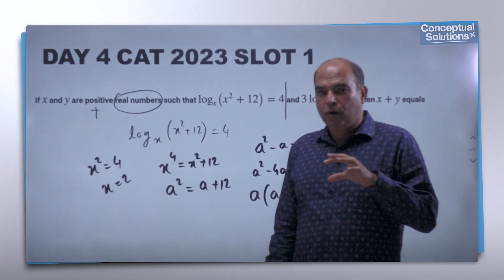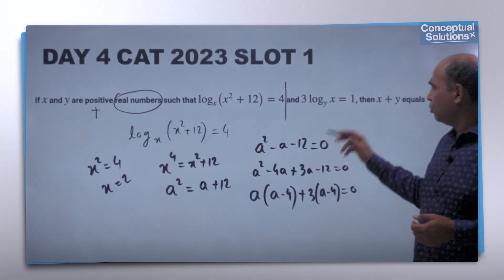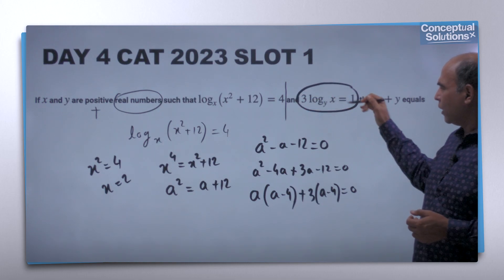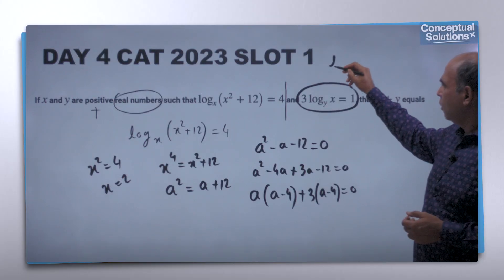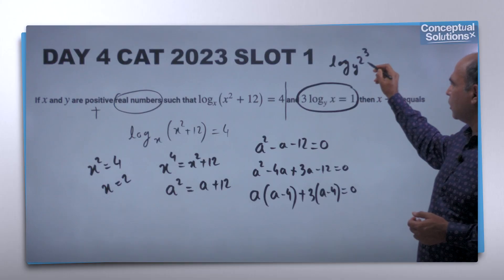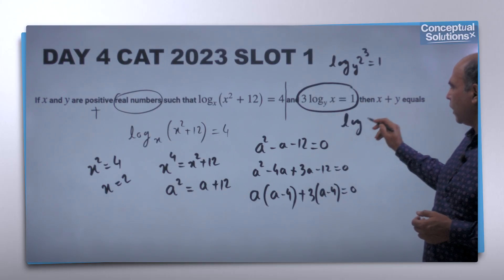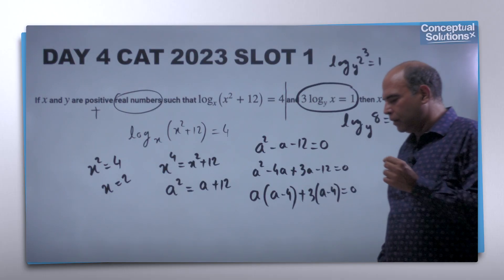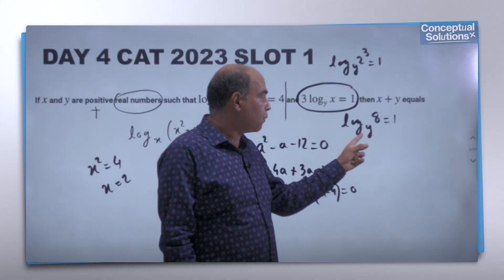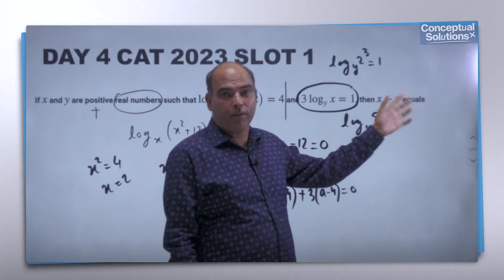This is the mathematical way of approaching this part. For the second equation, 3log_y(x) = 1. Since x = 2, this becomes log_y(2³) = 1, which is log_y(8) = 1. This means y = 8. Hence x + y = 10.